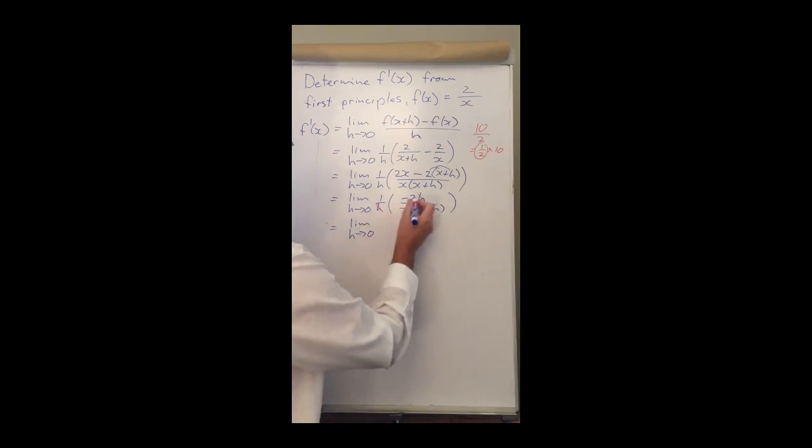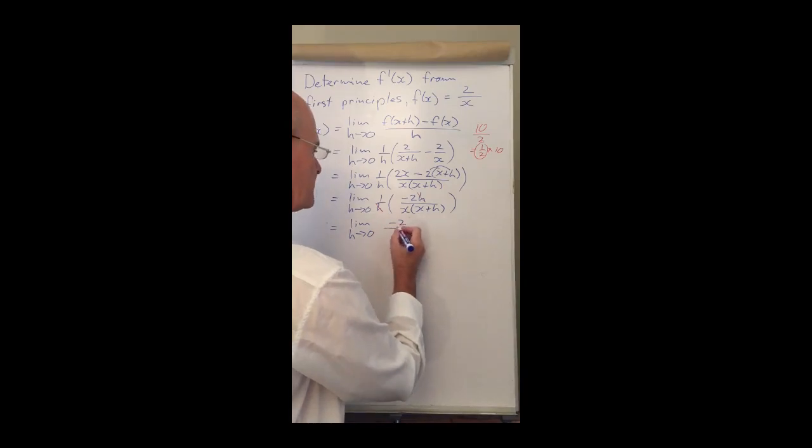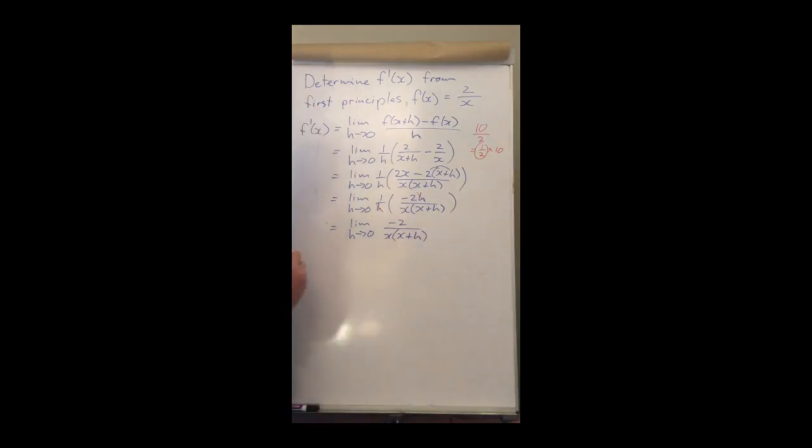So we have -2 over x times (x+h), right? So we can continue with that now. If we substitute 0 into h's place, we will see we don't have 0 as my denominator, so we will have a legal value over here that we can determine.